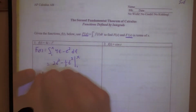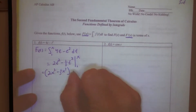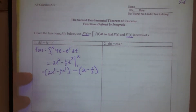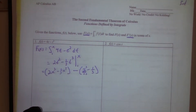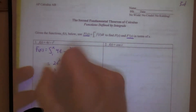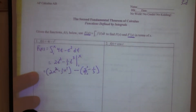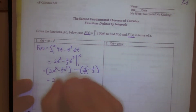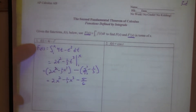Plugging in x gives us 2x squared minus one-third x cubed. Then plugging in 1 gives us 2 minus one-third, which is 5 thirds. So we end up with 2x squared minus one-third x cubed minus 5 thirds — wait, that's minus 5 over 3. And that is this capital F of x that they wanted us to find.